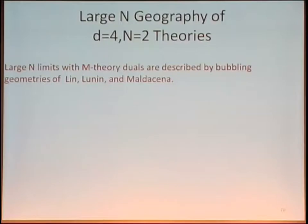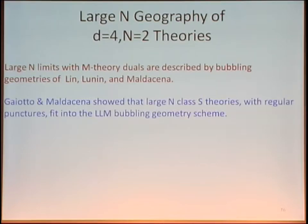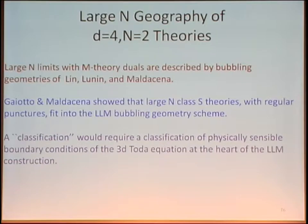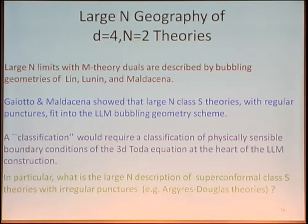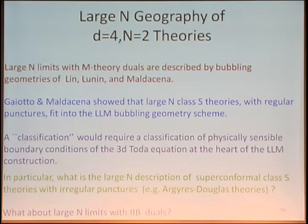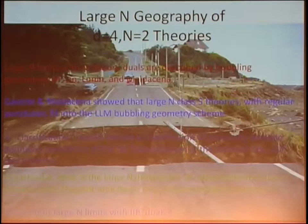A true classification would require a classification of good boundary conditions for the 3D Toda equation. We don't know the large N description of the superconformal class S theories corresponding to Argyres-Douglas theories — those are class S theories with irregular punctures. Then there can be large N limits with type IIB duals which don't lift to M theory — another gap in our knowledge.